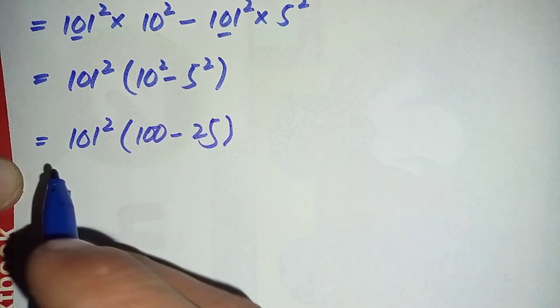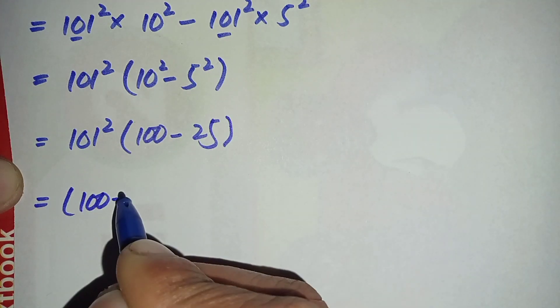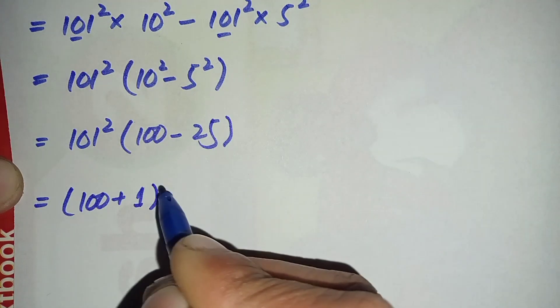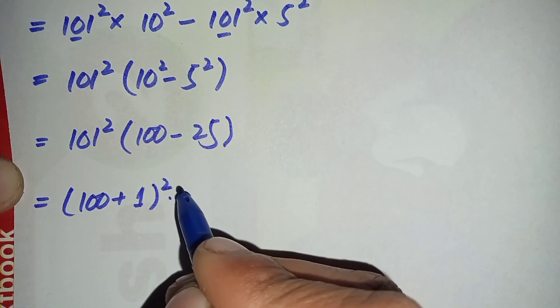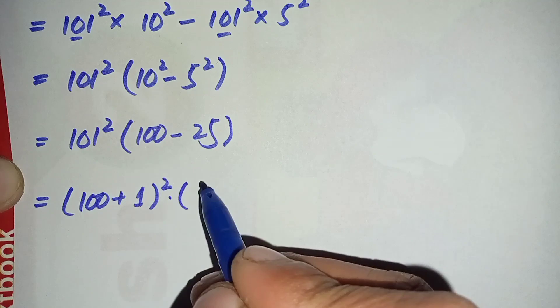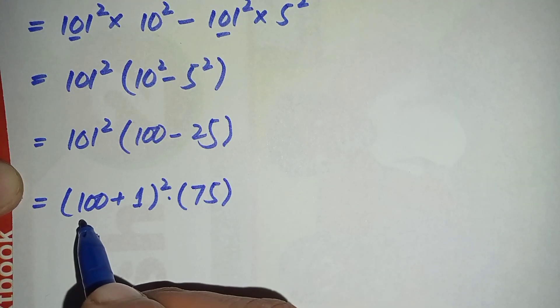Now in the next step we can write 101² as 100 plus 1 whole squared times, and 100 minus 25 is 75.